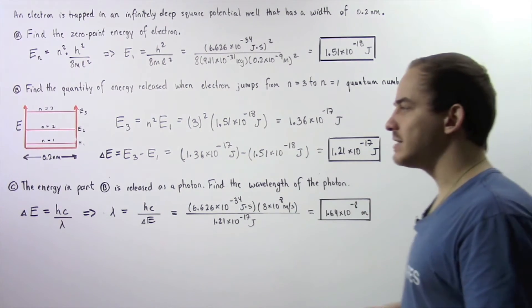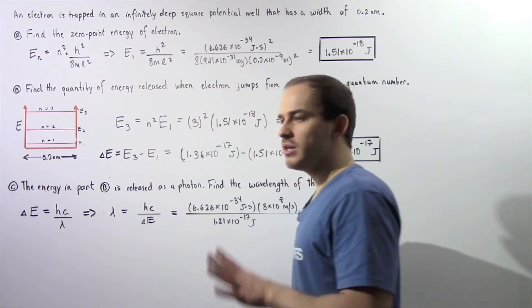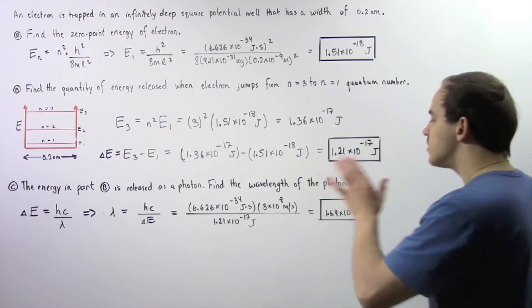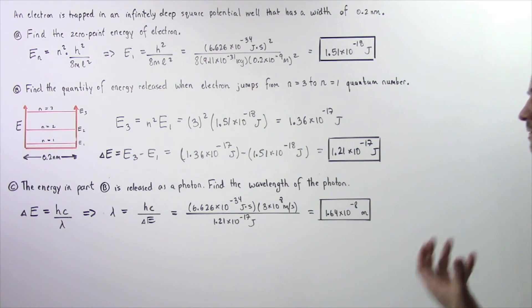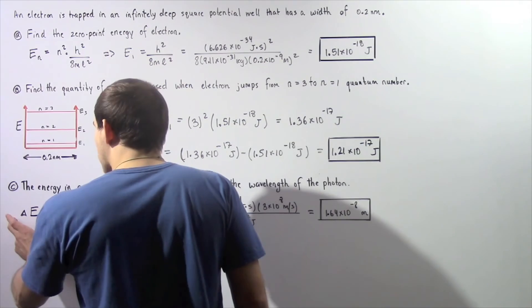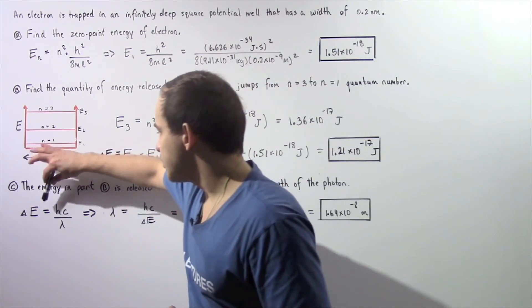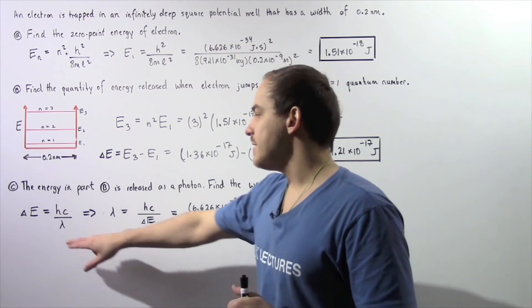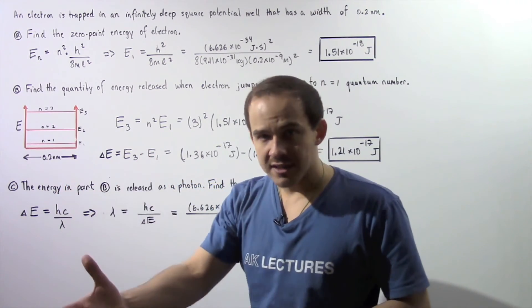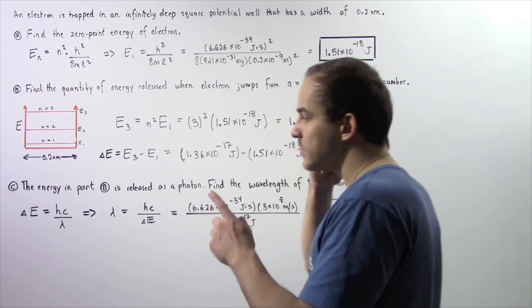Finally, let's move on to part C. The energy in part B is released in the form of a photon of light. We want to find the wavelength of that single photon. Recall that our energy that is stored within that photon is equal to H multiplied by C divided by lambda, where our H is Planck's constant, C is the speed of light in a vacuum, and lambda is the wavelength of light.